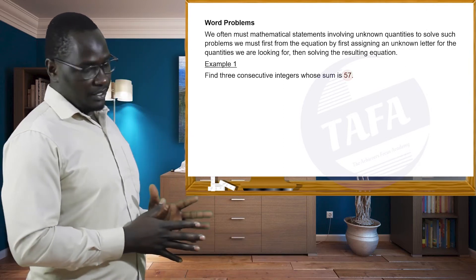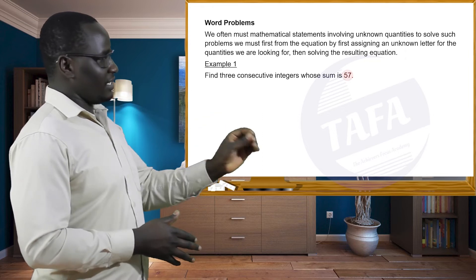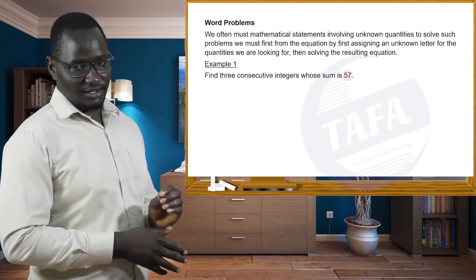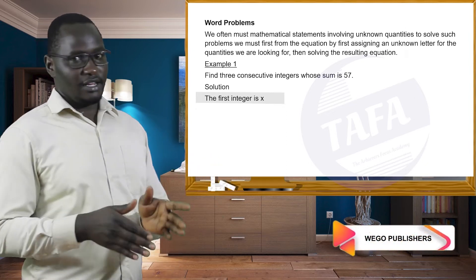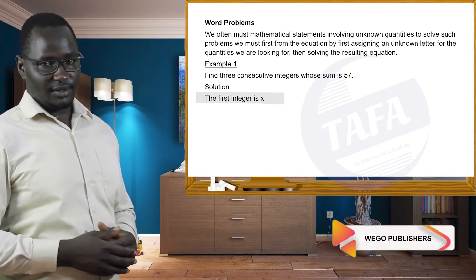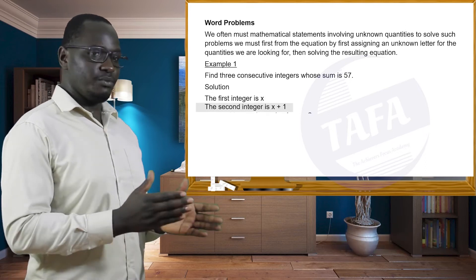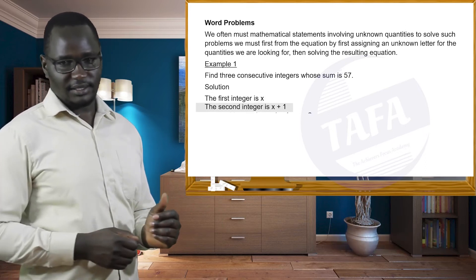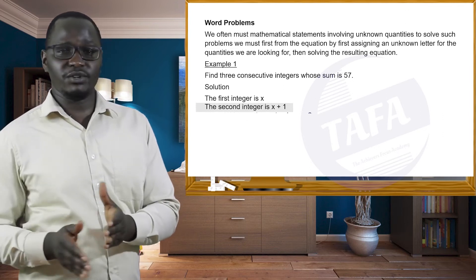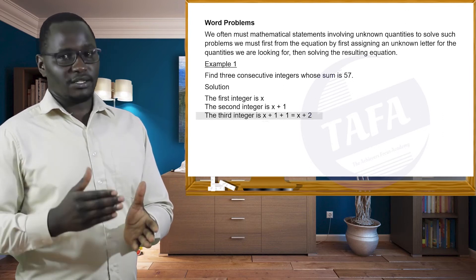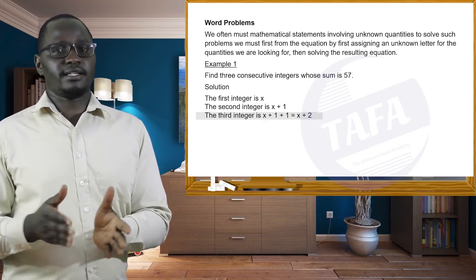Then we are told that the first three consecutive integers, we are going to let the first integer be x. It means the next integer is going to be x plus 1. And the next integer, because they are three consecutive, will be x plus 1 plus 1, which is x plus 2.